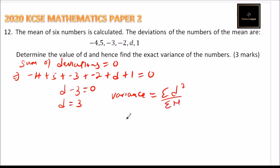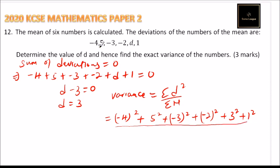This implies that here we have (-4)² plus 5² plus (-3)² plus (-2)² plus 3² which we have found to be d, then we add 1², and all this is divided by the number of data that we have, which is 6.